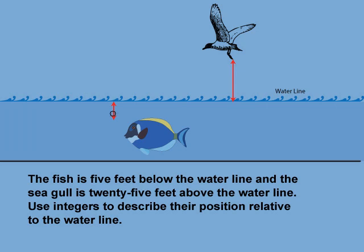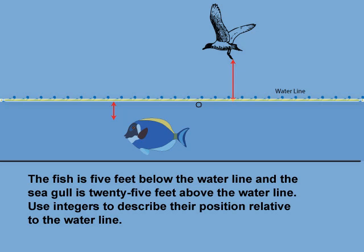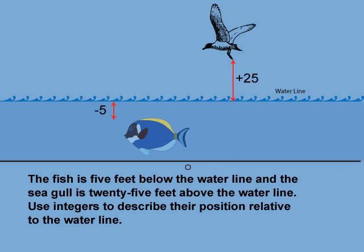The relative positions of above and below are a hint that integers can be used. Integers include the positive whole numbers, negative numbers, and 0. Think of the waterline as representing 0. We can define that a position above the waterline is positive, and a position below the waterline is negative. This means that the gull is plus 25 feet above the waterline, and the fish is negative 5 feet below the waterline. If we now include a duck swimming on the surface of the water — in other words, on the waterline — then its position is at 0.